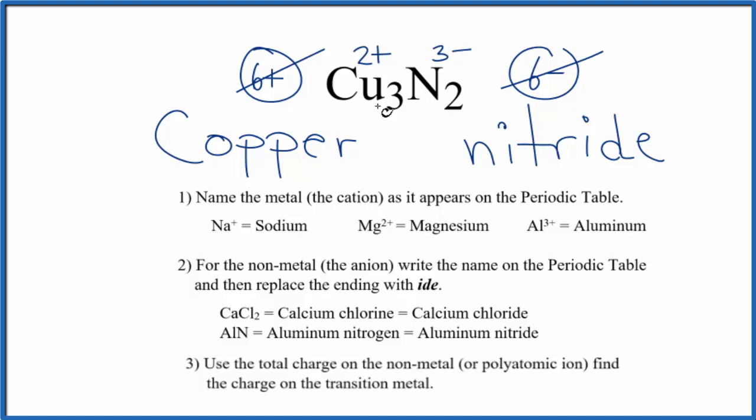So the way we show the charge on the copper here is we write a roman numeral two in parentheses. So each of these three copper atoms here has a charge of two plus.